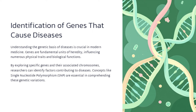The genetic basis of diseases is crucial in modern medicine, as genes are fundamental units of heredity that influence physical traits and biological functions. By exploring specific genes and their associated chromosomes, researchers can identify factors contributing to diseases. Concepts like single nucleotide polymorphism (SNP) are essential in understanding genetic variations and their role in disease development. This slide provides a high-level overview of the importance of identifying genes that cause diseases, setting the stage for a deeper exploration of the topic.